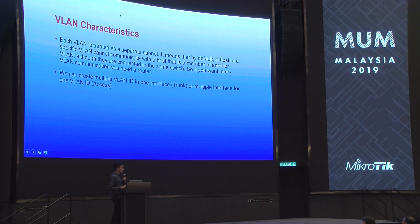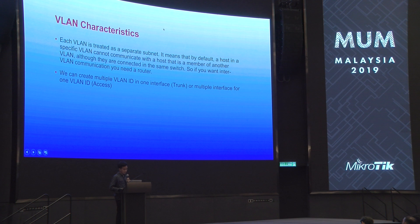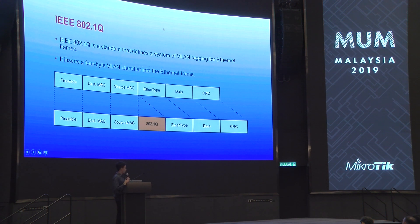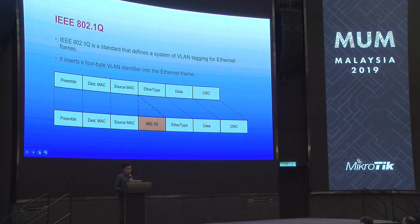Each VLAN is treated as a separate subnet because VLAN has a different logical network. VLAN uses the IEEE 802.1q standard. 802.1q is a standard that defines a system for VLAN tagging.